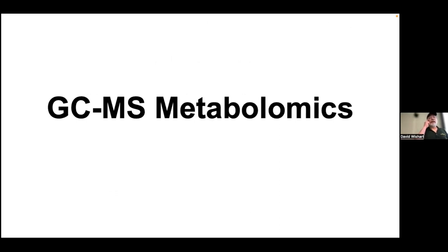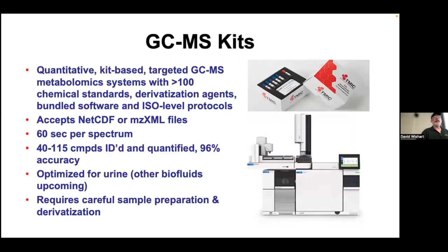Switching to GC-MS metabolomics—I'm just doing kind of an overview because we're short on time. There are kits available. The one we'll be using is specifically optimized for urine; the sample data in the lab is from urine. Running the kit takes a few hours, but once you've got the data, the analysis in principle should take only a minute or two.